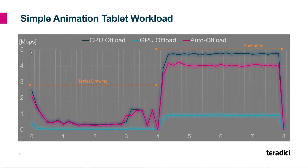Overall we're still using under 5 megabits per second for all these workloads, and the dark blue line shows what happens if you're using strictly CPU offload — that would be your most color-accurate use case. For network bandwidth savings we're still getting great efficiency. We're able to get color accuracy most of the time, which is why you're only seeing about a 10% network bandwidth saving in auto-offload mode, but your overall bandwidth is really low anyway and this workload would easily run over most home networks.